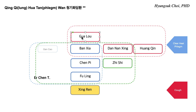Gu Lu is also used for constipation. Gu Lu Ren — this is a seed. So Gu Lu goes to the lung and large intestine, Yang Ming — foot Yang Ming and hand Yang Ming — with the same property: nourishing, moisturizing. So it removes phlegm, nourishes the phlegm, and clears lung heat.